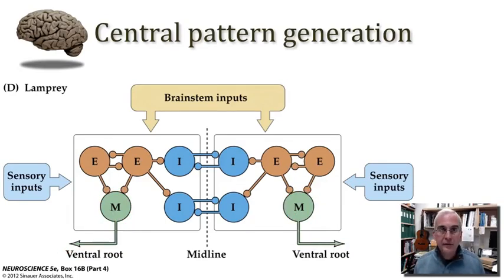Studies of these fairly simple central pattern generators that we see in animals like the lamprey or in other kinds of simple model systems that generate rhythmical behaviors, what we find is that central pattern generators tend to have the same kinds of elements no matter what the model system is that we happen to be looking at. There are variations on these themes, but we tend to recognize the same kinds of elements that are common to all circuits that generate patterns.